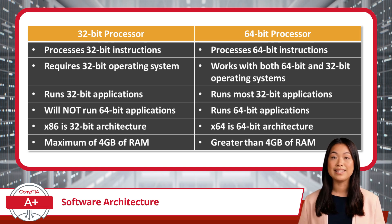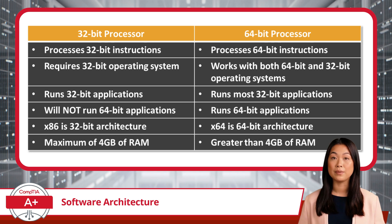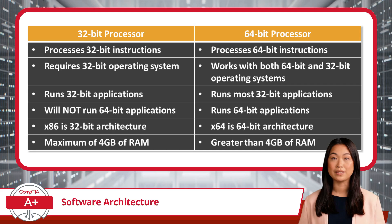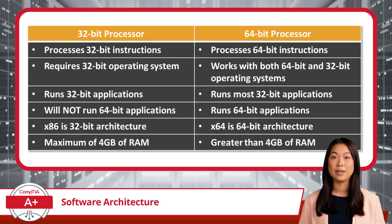I know x86 is confusing to use as a reference to 32-bit architectures, and it would have been a lot easier to remember if it was x32, but I don't make the rules. One last fact for 32-bit and 64-bit CPUs before I move on. A 32-bit CPU will limit the amount of RAM that can be recognized by a computing system to 4GB.